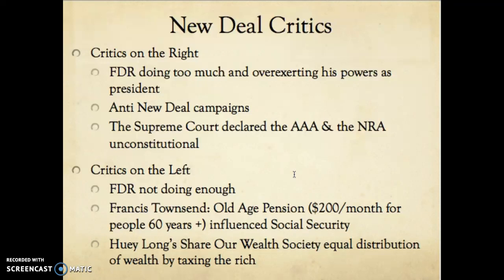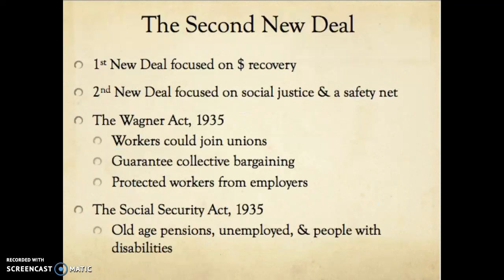While these people were competing against Roosevelt, he was astute enough to use some of their ideas in his Second New Deal. His first New Deal focused on economic recovery; his second New Deal focused on social justice and a safety net where government funds were used to help people. The Wagner Act — since the NRA was declared unconstitutional — allowed workers to join unions, guaranteed collective bargaining, and protected workers from employers. Collective bargaining means a group of people come together to bargain for better wages, working conditions, and health pensions. Then the Social Security Act of 1935 gave pensions to elderly people, helped unemployed workers receive money, and also provided funds for people with disabilities. Roosevelt used the tactics his opponents were using against him for the benefit of the public.